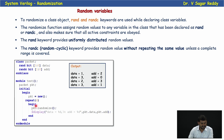Looking at the output of this program: in the first randomization, I get data equal to 1 and addr equal to 2. In the second randomization, data equals 3 and address is 0. In the third, data is 2 and address is 3. In the fourth, data equals 3 and address equals 1.